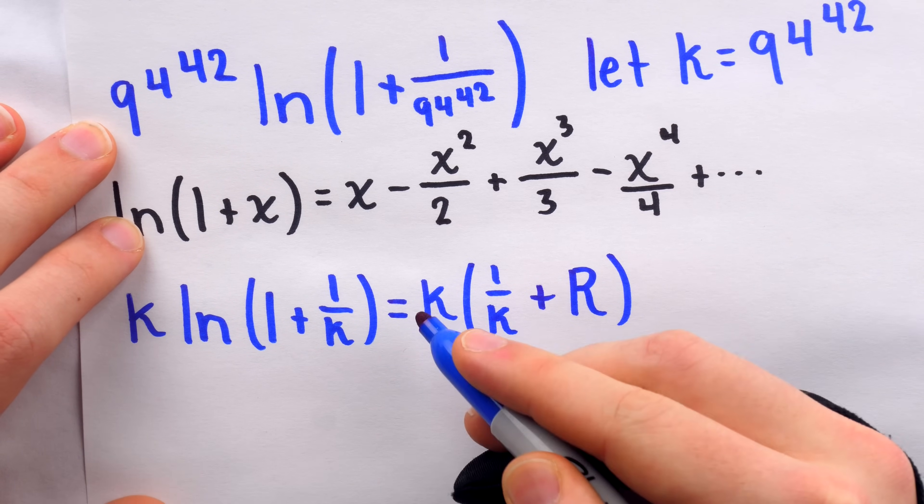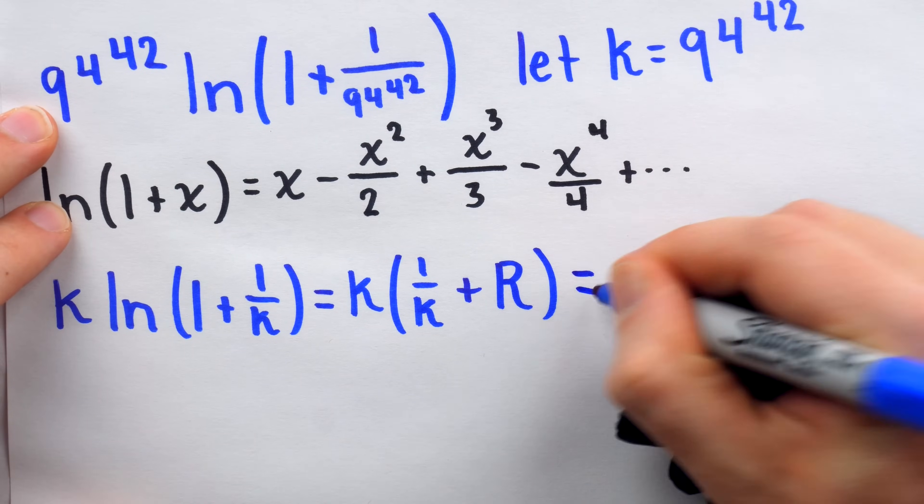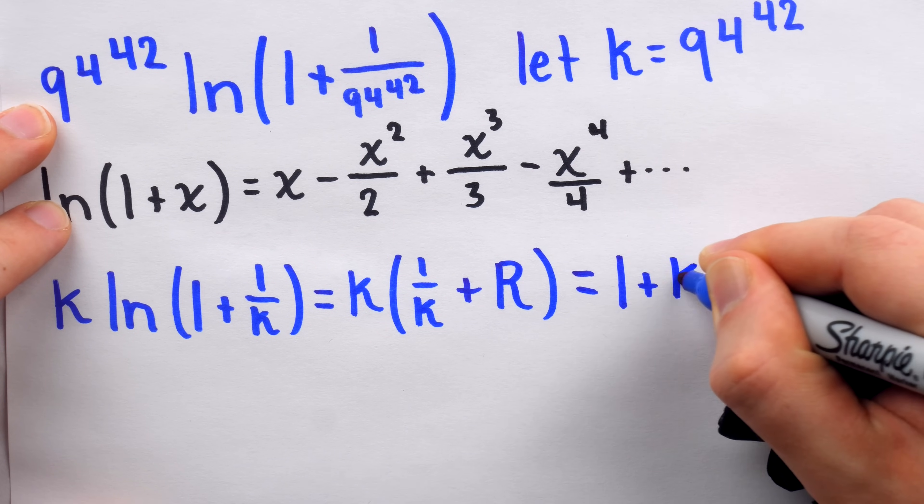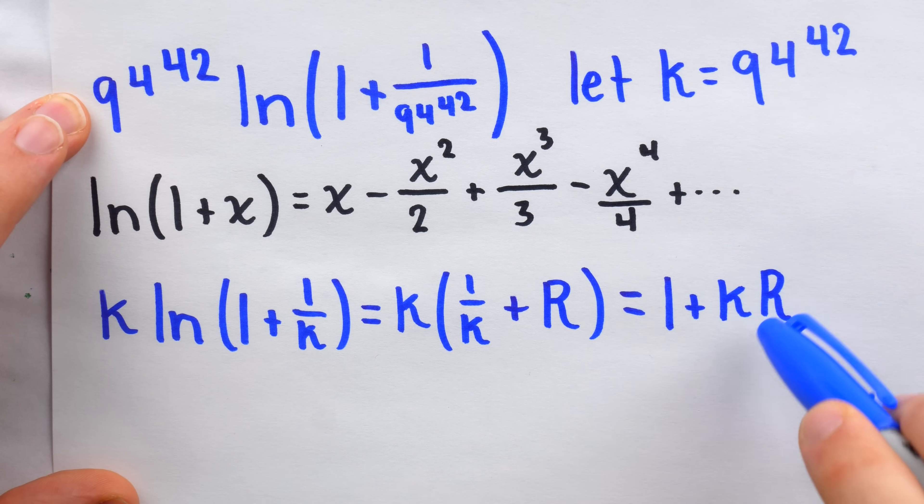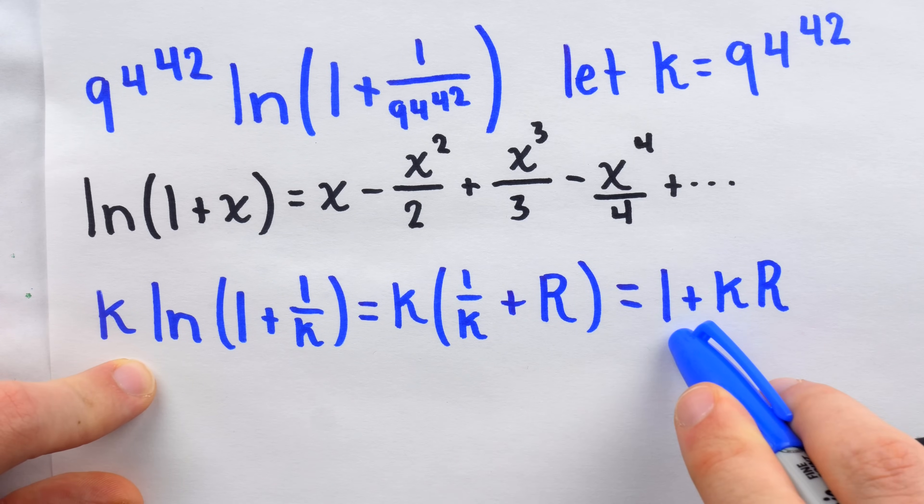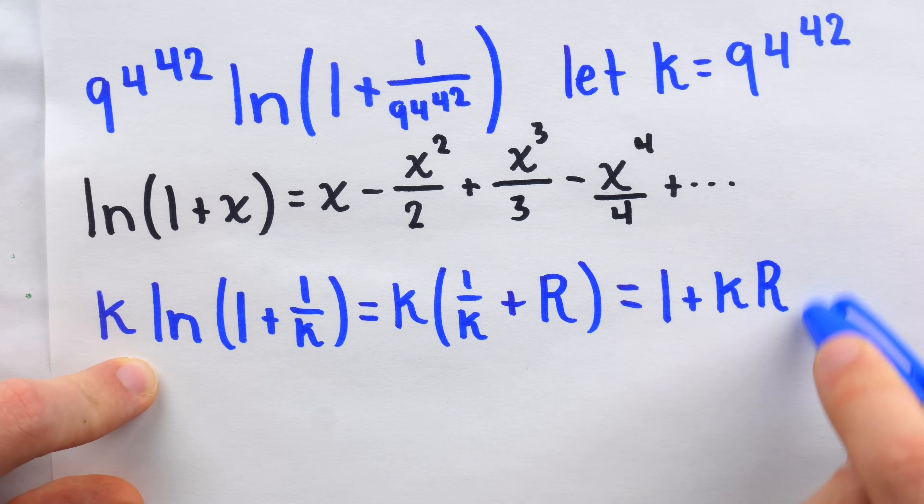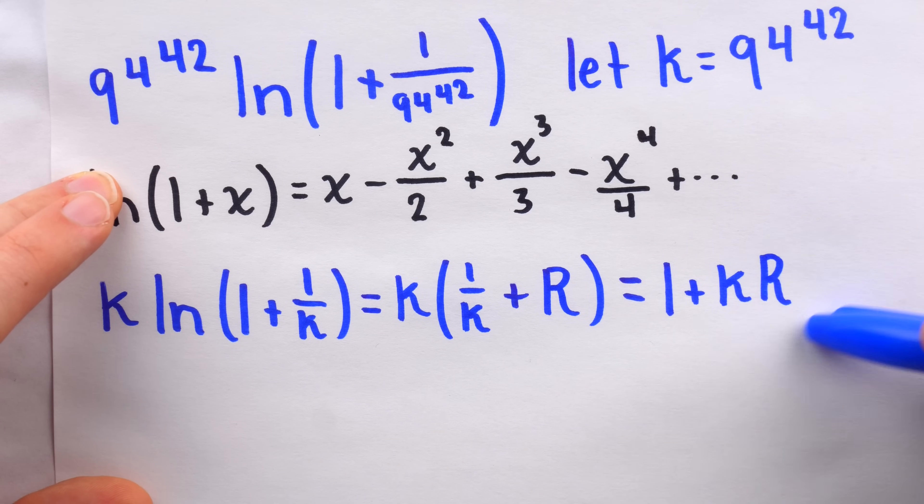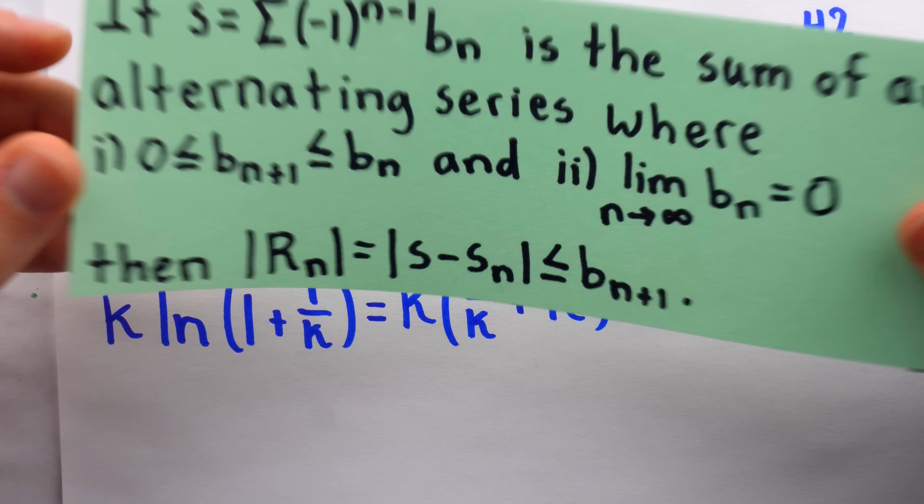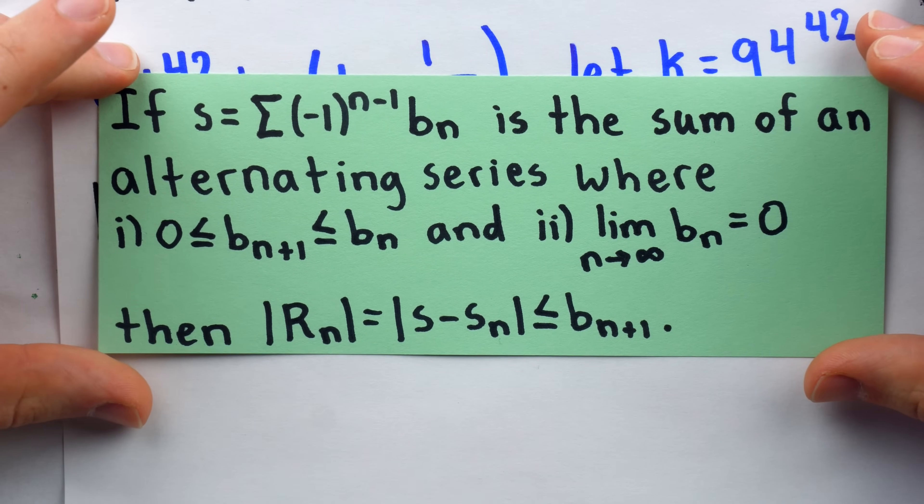The natural log of 1 plus x with x equal to 1 over K is this. 1 over K, that first term, plus the remaining terms, which we'll say add up to R. Again, we want this to be close to 1. If we distribute K, what we get is K times 1 over K, which is 1, plus K times R. The question, then, is how big is the remainder R? We have here 1 plus K, so we would like K times R to be very small. But if the remainder is quite large, then it could be that this is not close to 1 at all, because it could be 1 plus some big number.